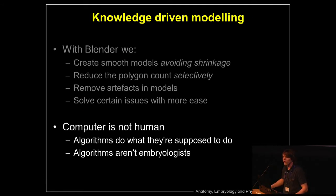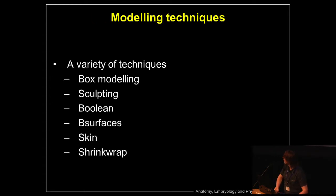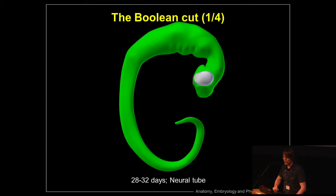Computers are not humans — they are not embryologists, they don't have the knowledge we do. They do what they're supposed to do and we love them for it, but they're limited when it comes to actually looking at the subject and working with embryologists to get the right result. I'm going to show off some models and go into a few techniques that really helped me. For example, this is a technique we call Boolean Cuts. This model is actually one model, but we want to divide it into four parts.